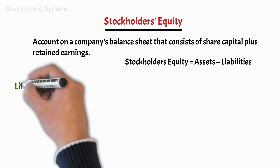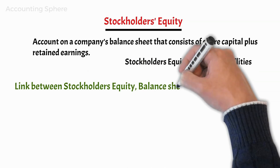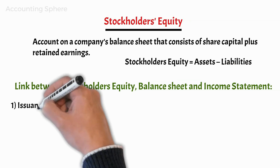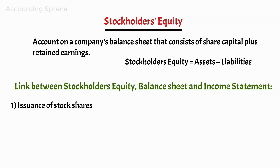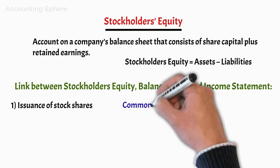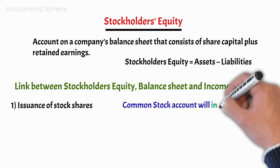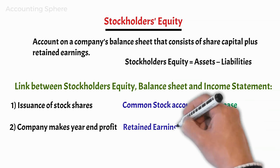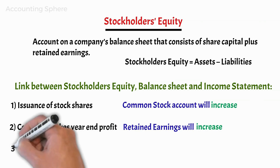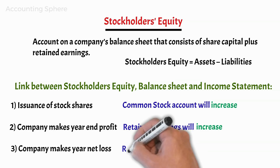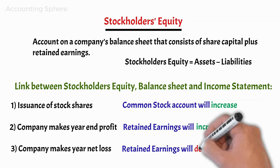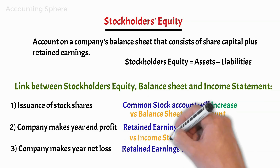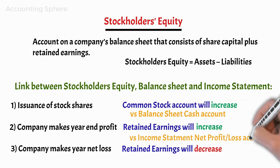The link between a company's balance sheet and income statement can be explained as follows. First, when the corporation issues shares of stock in return for cash, the account common stock will be increased. Second, when the company makes a profit, retained earnings will increase. Third, if a company makes a net loss, then retained earnings will decrease. As a note, if there is also a large debt liability, it may indicate an oncoming bankruptcy for that business.